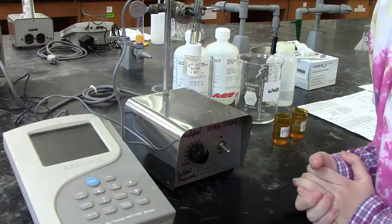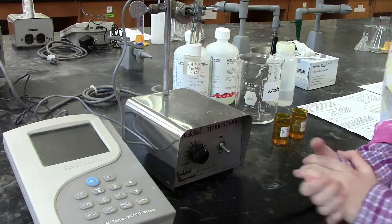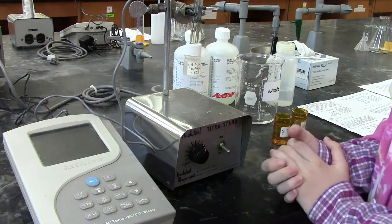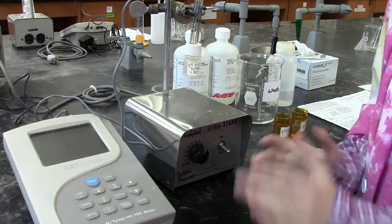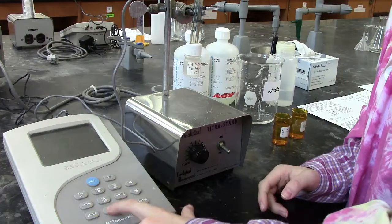pH meters are very useful tools as they allow us to measure the pH of unknown solutions. To start using a pH meter, we must first turn it on. This is done by pressing the circular button.